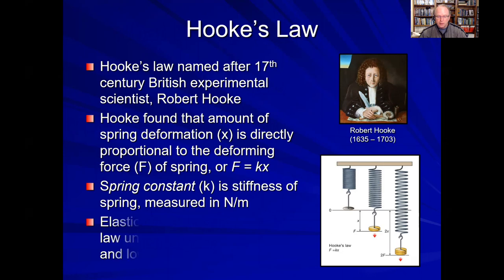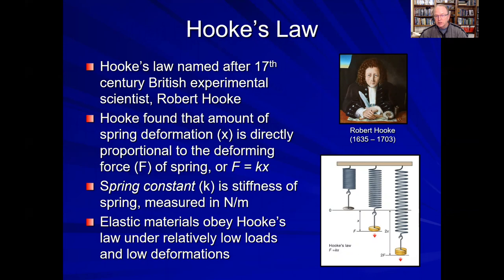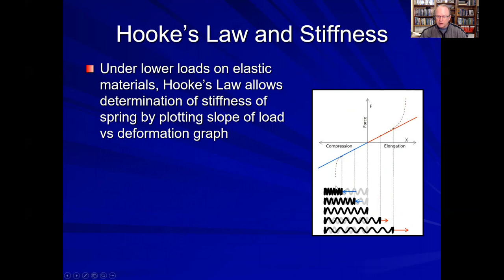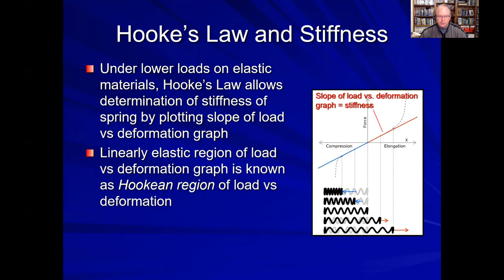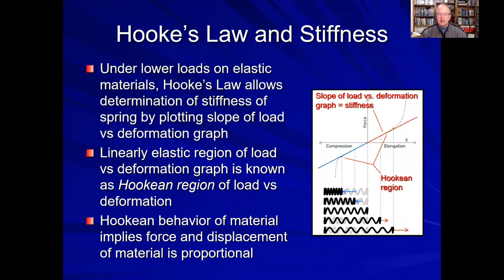Elastic materials, whether they're steel springs or tendons or ligaments in the body, will obey Hooke's law under relatively low loads and low deformations. When we look at a graph of a steel spring, we can see that as long as we keep the loads on that spring fairly low, we're going to have a nice straight curve. The slope of this graph is going to be the stiffness of that spring. We can calculate the slope and say that's the stiffness — that's going to be the K value in Hooke's law. This linearly elastic region is also known as the Hookean region of the graph. When we say something has Hookean behavior, it means that the displacement and the applied force to that material are going to be proportional to each other.